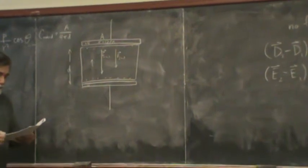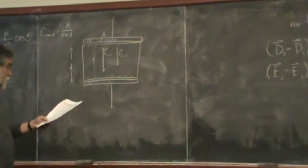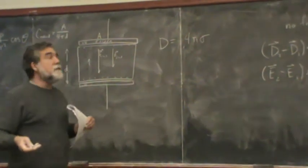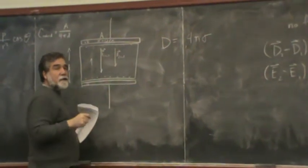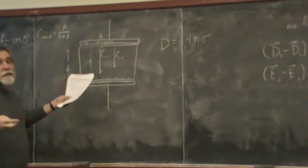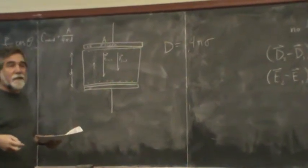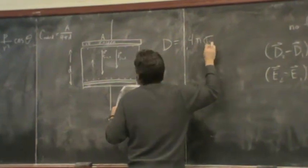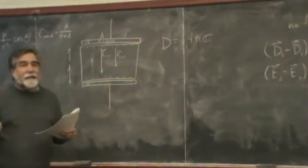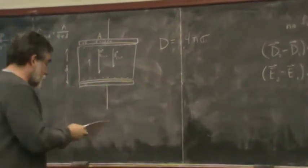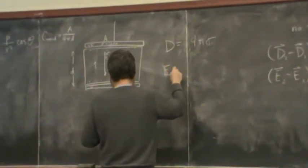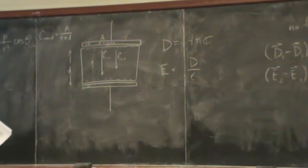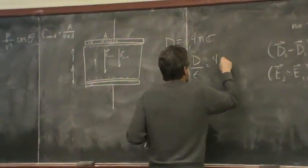But the D field doesn't change because that's only however much free charge we have. So here I can write that D is equal to four pi sigma. I could have deduced this using Gauss's law at one of the interfaces, but we just did it in analogy to what we knew about the field between two plates with the charge density on the surface. And that was just the free charge, I'll remind you that this is free. I haven't paid any attention to the bound charge yet. All I know is that D is equal to four pi sigma, but then E is equal to D over epsilon. Or writing it out is four pi sigma over epsilon.